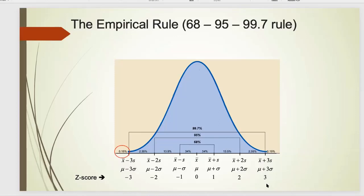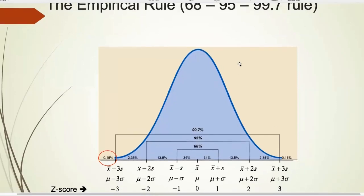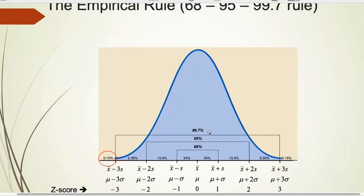If you see an observation with a z-score of +5, that's somewhere far to the right — very unlikely. The empirical rule says most observations fall between plus and minus three. Anything beyond three standard deviations is extremely rare — that's only 0.15%, which corresponds to 0.0015. Very, very unlikely.